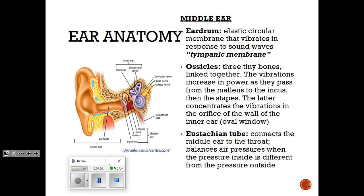There's another structure, the Eustachian tube, that's in the middle ear but doesn't have to do with hearing — it's regularly used as an incorrect answer in multiple choice questions. This tube connects your middle ear to your throat and nose. It helps balance air pressure when the pressure inside the ear differs from outside, like when you go up on a plane. Your ear, nose, and throat are all connected — that's why there are doctors called ENTs: ear, nose, and throat doctors.